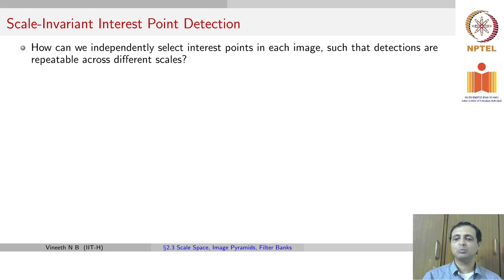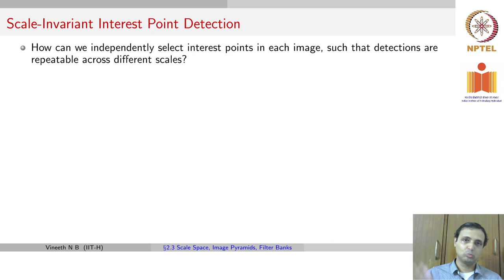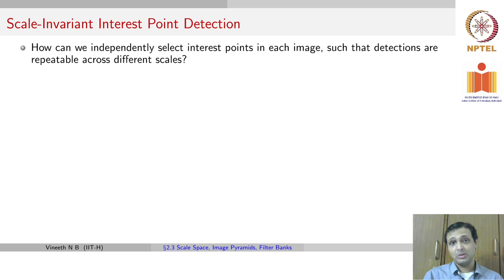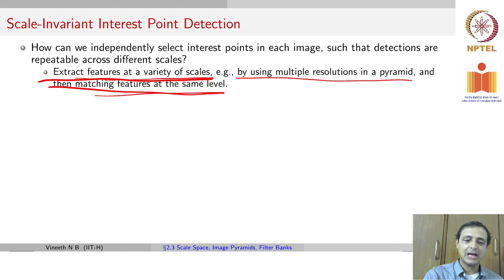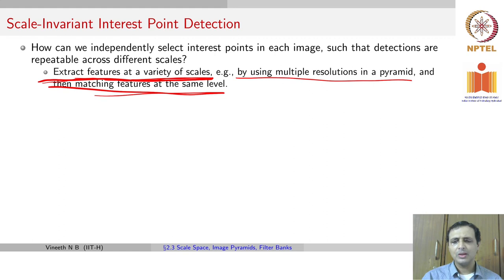We want to ask: how can we independently select interest points in each image such that detections are repeatable across different scales? If there are two images at different scales — one zoomed in, one zoomed out — we want to detect a key point in both. A simple approach is to extract features at a variety of scales using multiple resolutions in a pyramid and then match features at the same level.